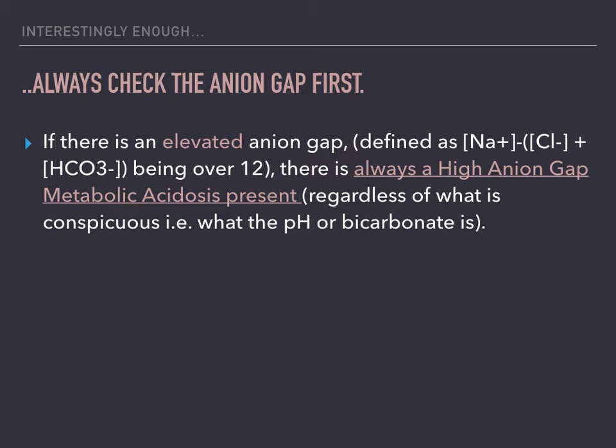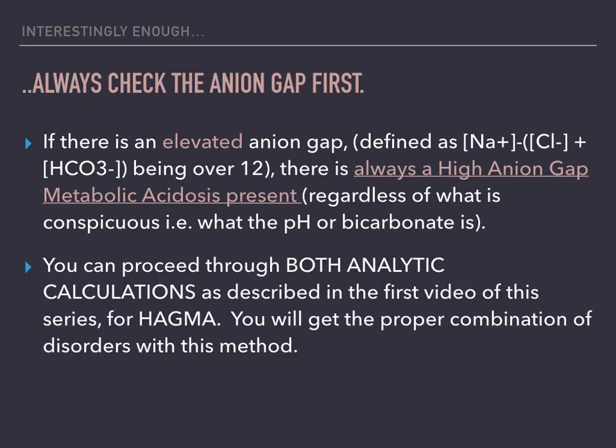If there is an elevated anion gap in the problem, there is always a high anion gap metabolic acidosis present, regardless of what is conspicuous, regardless of what the pH is, and regardless of what the bicarbonate is. If there is a high anion gap present, you can proceed through both analytic calculations as described in the first video of this series, and you will get the proper combination of disorders.